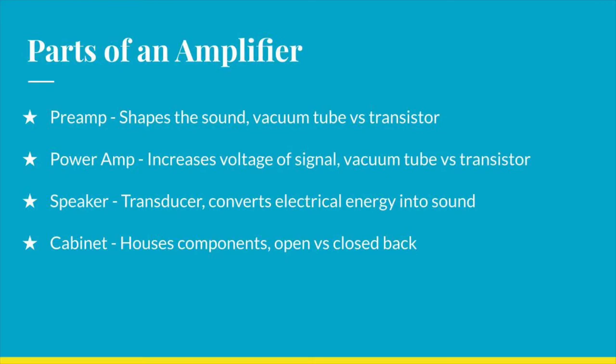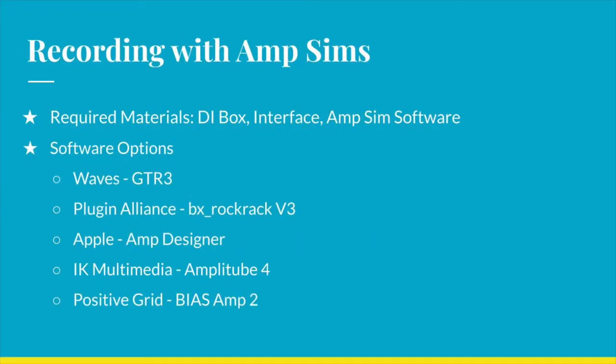I mention these components of an amplifier because in the amp simulator software that I used, BiasAmp2, you can change the settings and components of each of these parts. To record with an amp simulator, you're going to need a DI box connected to your interface and your amp sim software of choice. You have several software options, including Waves Guitar 3, Plugin Alliance RockRack V3, the Apple Amp Designer which comes free with Logic Pro, IK Multimedia's Amplitube, and the software that I used and is my personal favorite, BiasAmp2.